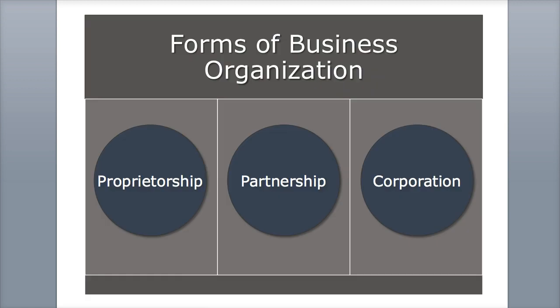Let's look at some forms of business. There are three major forms of business: partnerships, sole proprietorship, and corporation. There are some gray areas and additional forms that fall in between these three, but these are the three high-level classifications of different forms of business.